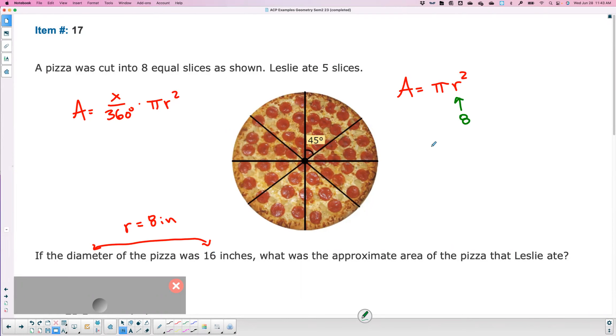So go to your calculators. And what do you get when you do pi times eight squared? 201.06. And this would be in inches squared because eight was in inches and you squared it. So inches times inches is inches squared.